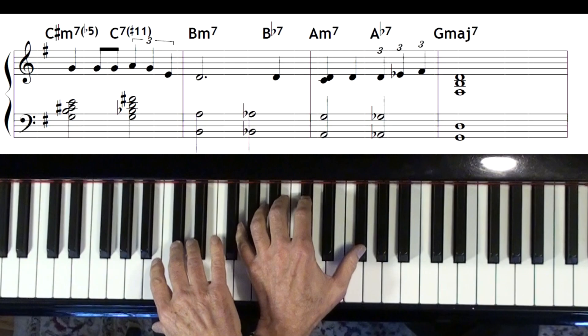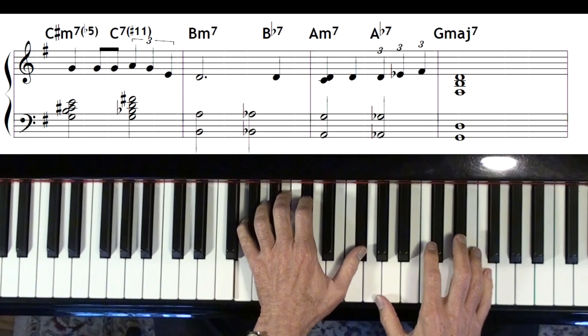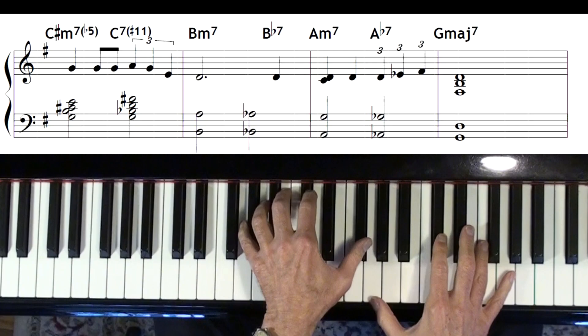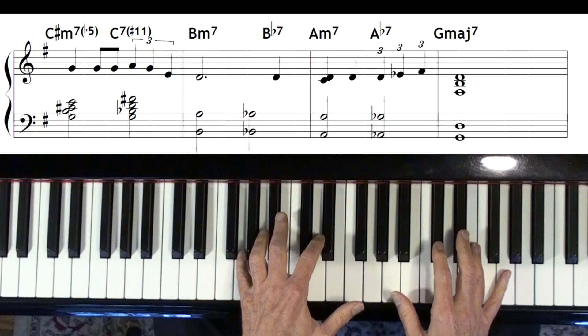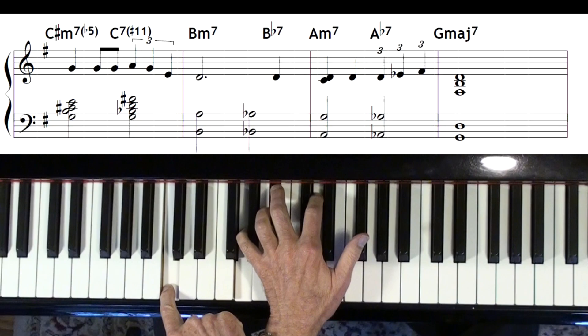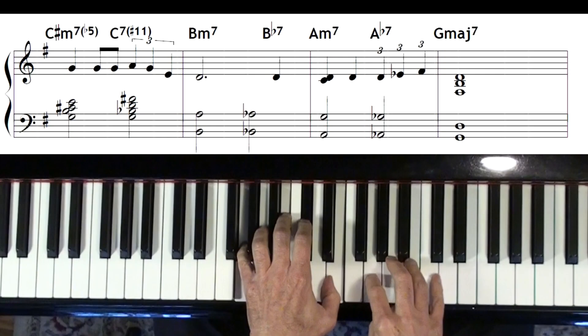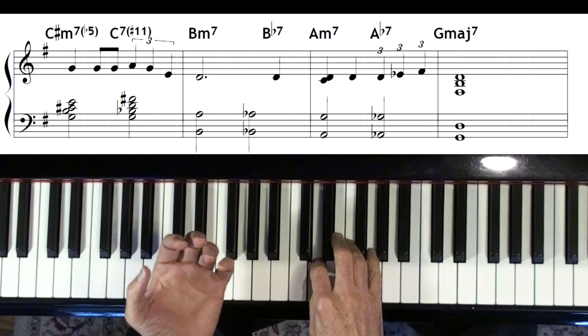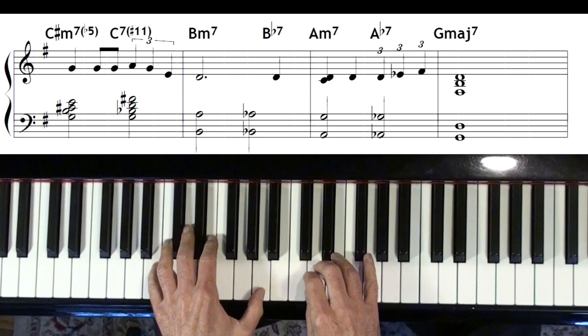So going from C sharp minor 7 flat 5, and it kind of fights against the melody note there. So maybe just change it to this. And there I did G minor with a major 7, because that will function not only as E minor 7 flat 5, but also as C dominant 9 sharp 11. So that kind of works kind of nice. And then really, you can't just use rootless voicings all the time, even playing solo. Especially playing solo piano, you've got to put the roots in pretty often.